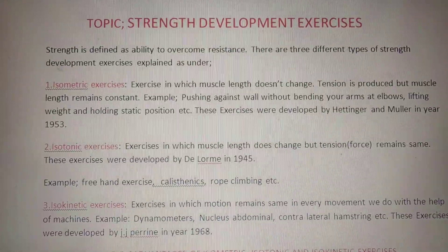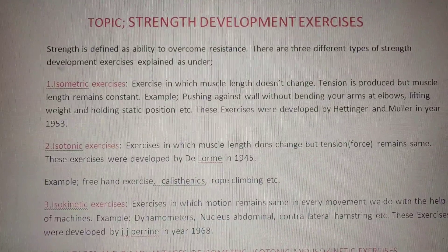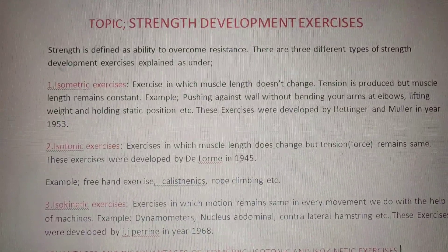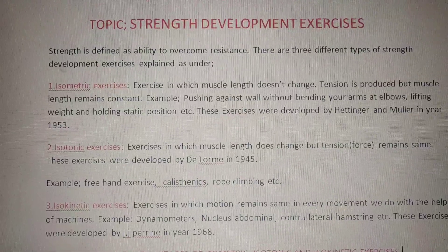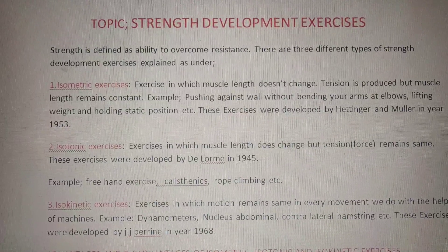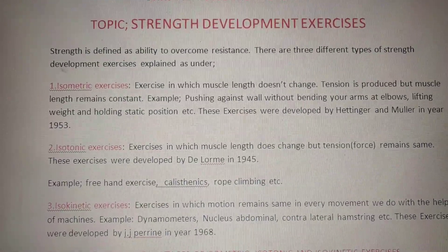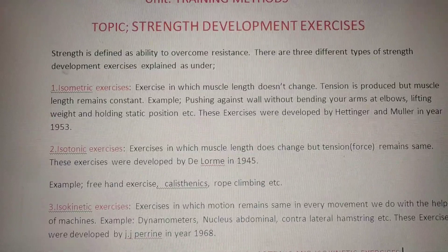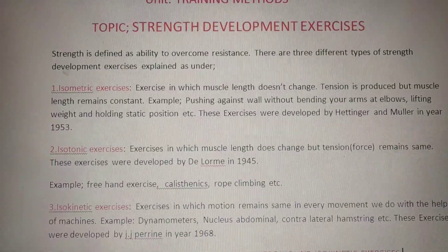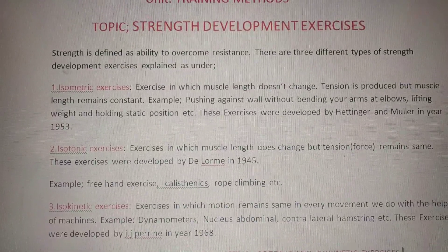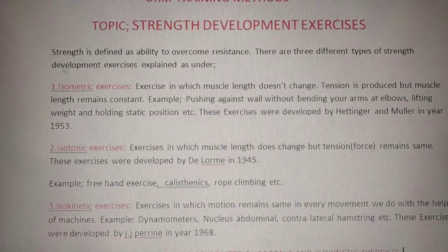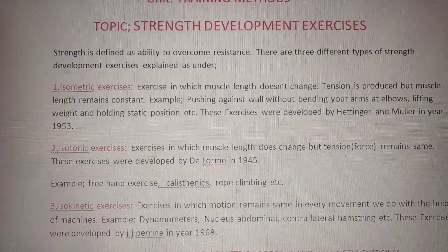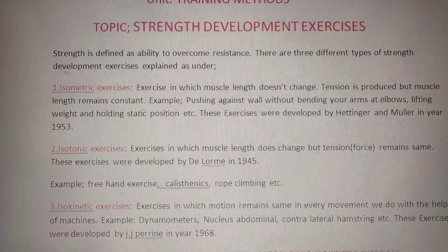Number two: isotonic exercises — exercises in which muscle length does change, but the tension, which means force, remains the same. These exercises were developed by DeLorme in 1945. Examples of isotonic exercises are freehand exercises, calisthenics, rope climbing, etc.